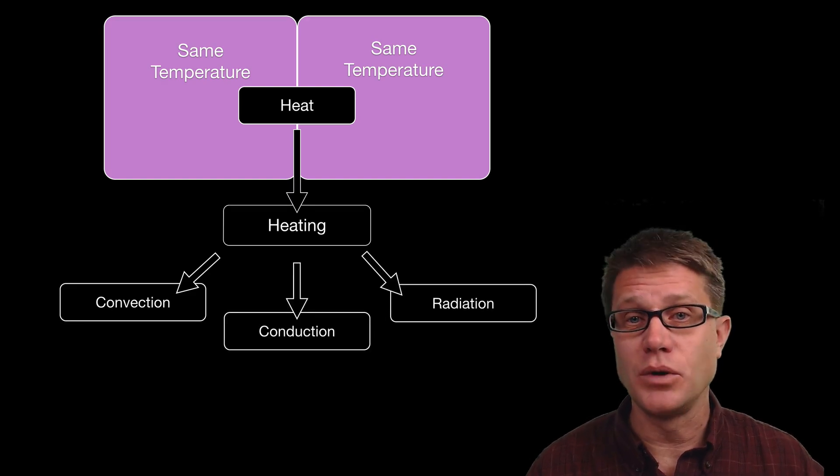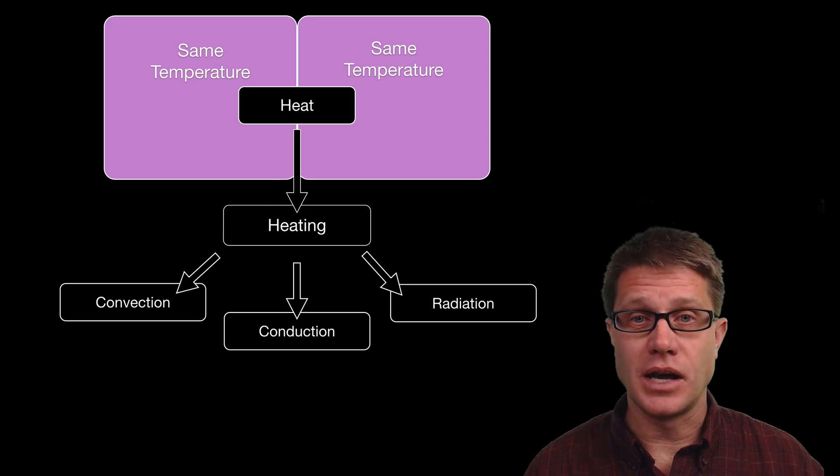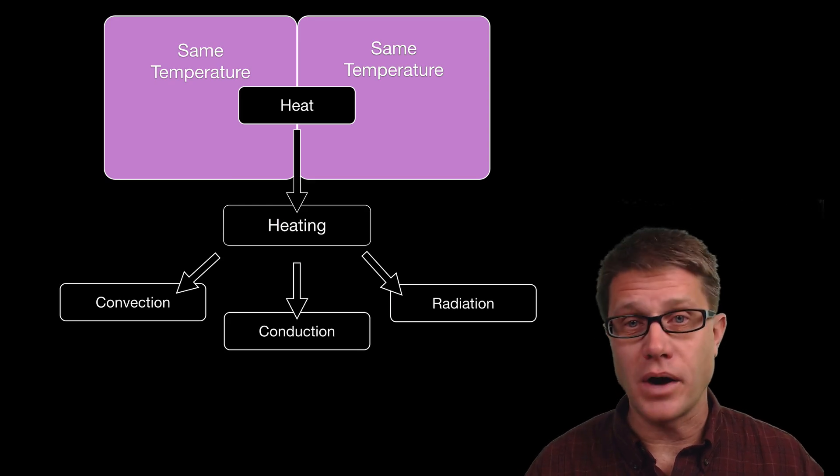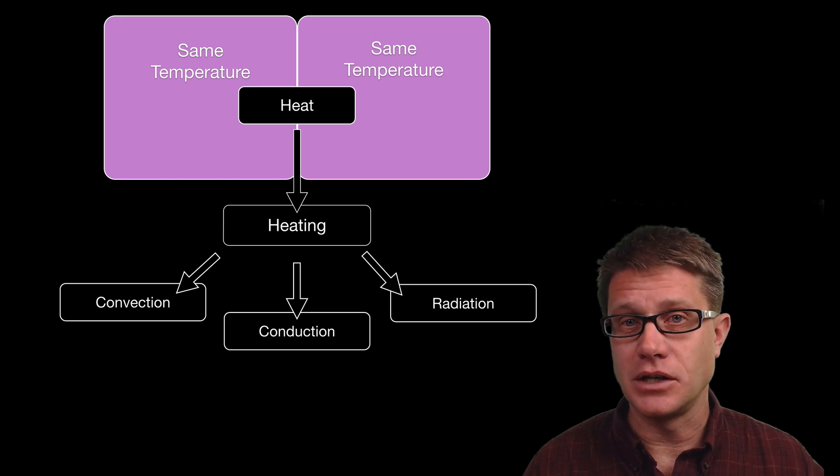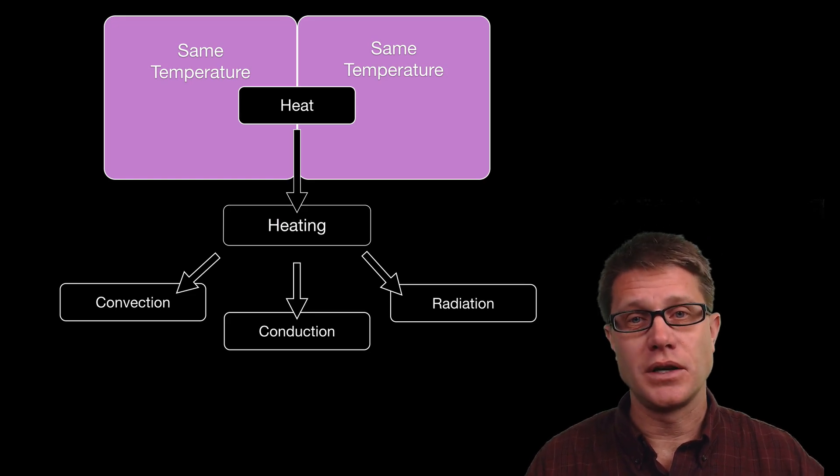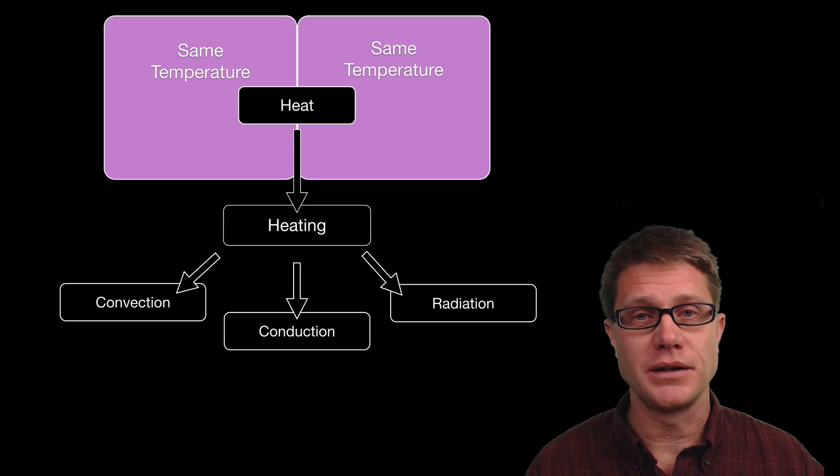Now what is convection? That is movement of fluids. So for example that is what causes hot air to rise or boiling water to move to the top. Conduction is when it is actually touching. And then radiation is when we are moving electromagnetic radiation from one place to another.